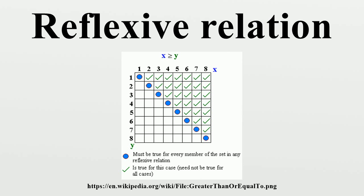A reflexive relation is said to have the reflexive property, or is said to possess reflexivity. A relation that is irreflexive, or antireflexive, is a binary relation on a set where no element is related to itself.